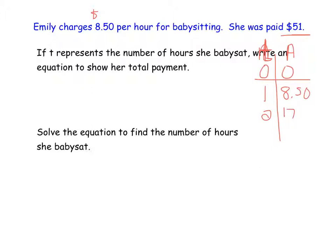So if she babysat T number of hours, we would take our $8.50 and multiply it by the number of hours. So, $8.50 times her number of hours equals 51.